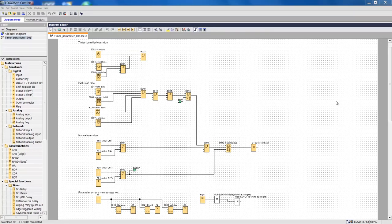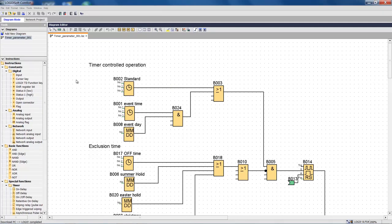Our example program controls switching operations for a school's outdoor lighting system and we have various sections in the display. In the upper section I can define set switching times.